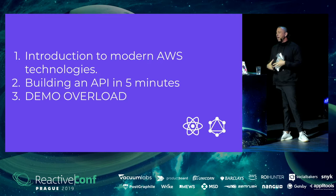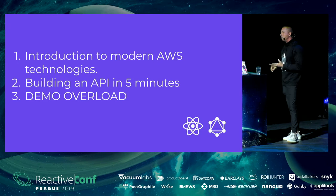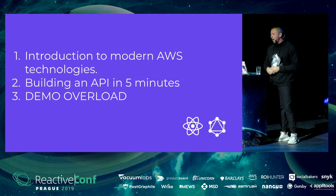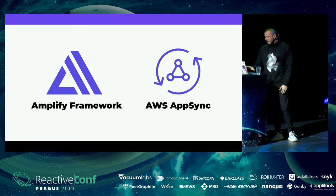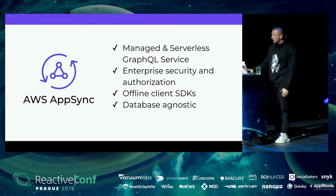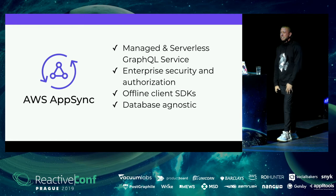I'm going to build an API in five minutes — an API that includes authentication, authorization, database, data connections, and relationships between the data — and we're going to test it all out within five minutes, followed by demo overload. I work for AWS on the client technologies team. The two technologies I work most closely with are AWS Amplify and AWS AppSync. AppSync is a managed GraphQL service — think of it essentially as something like Firebase but for GraphQL.